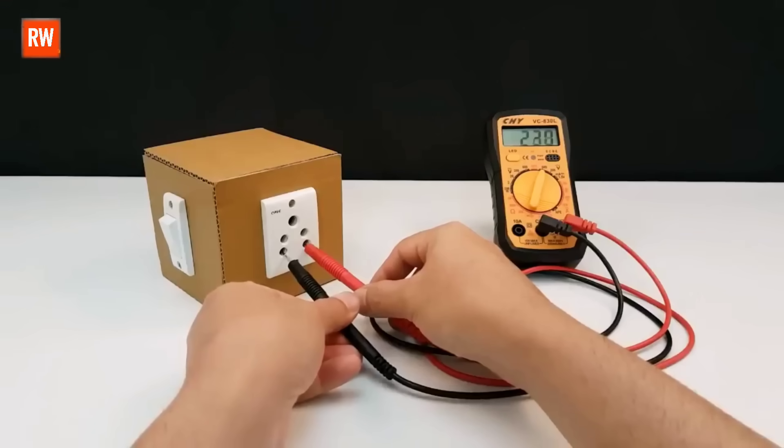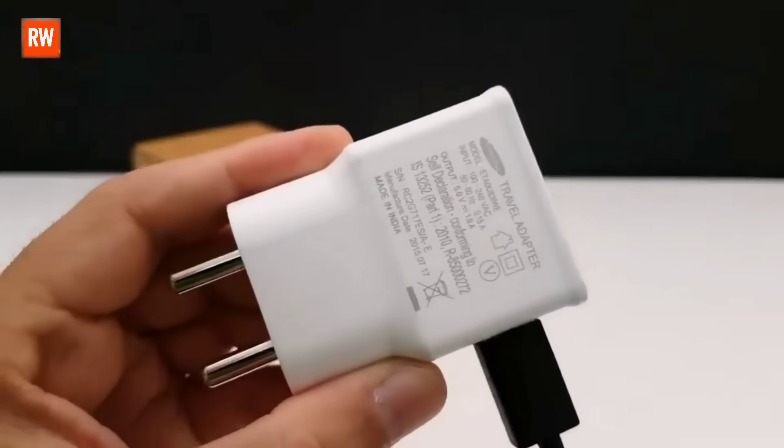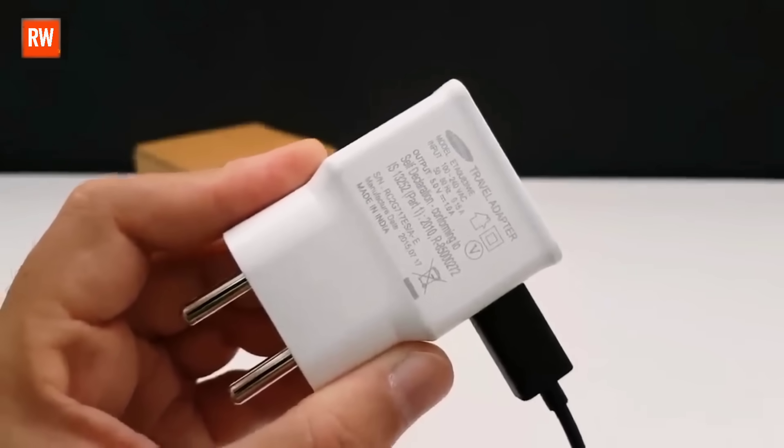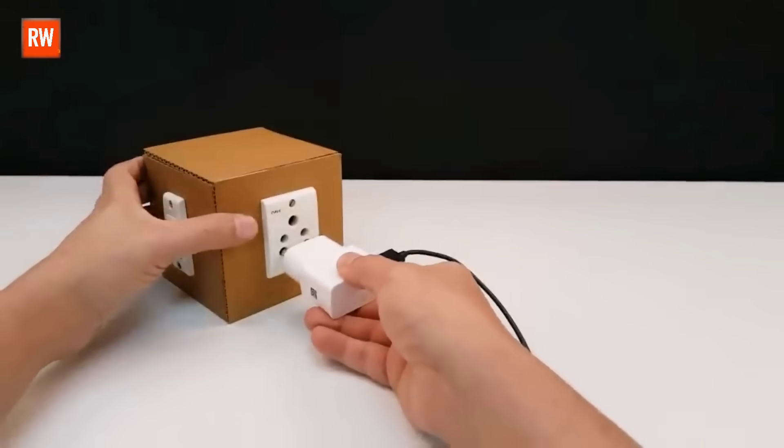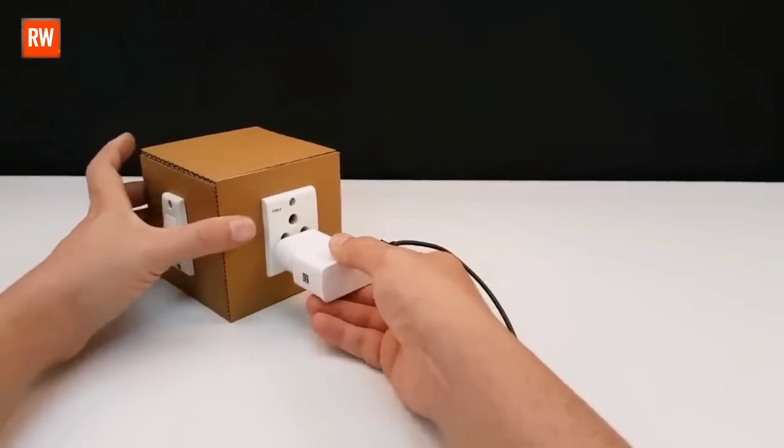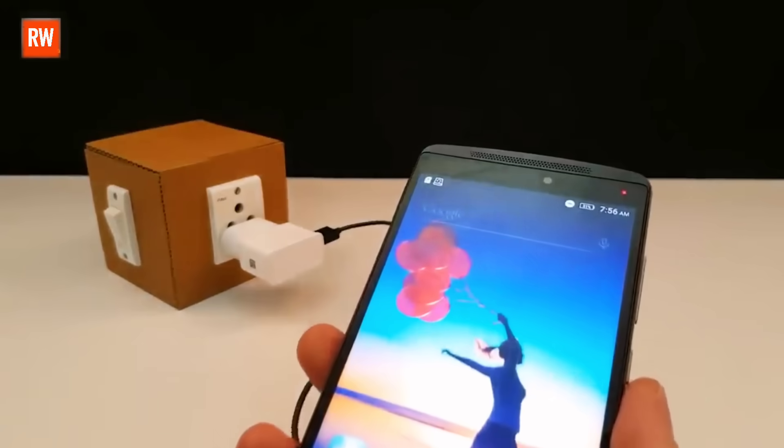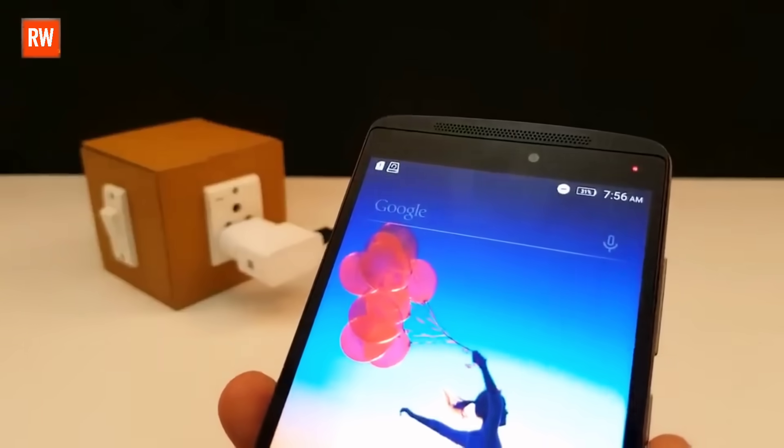As you can see, we're getting 230 volts AC output. To take the testing one step further, I decided to connect a mobile charger directly to the AC output socket of the inverter. And as you can clearly see, the charger turned on instantly, and the phone has started charging.